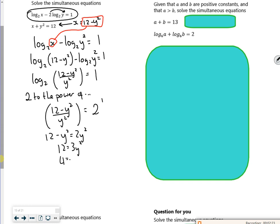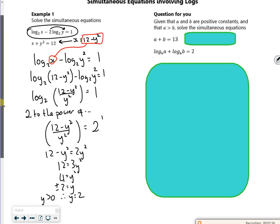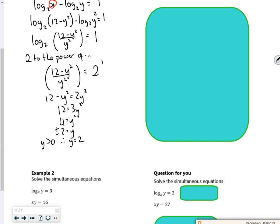so plus or minus 2 is y. But for log 2 you need a positive value, so y has to be greater than 0, so y is 2. So I'll solve it,